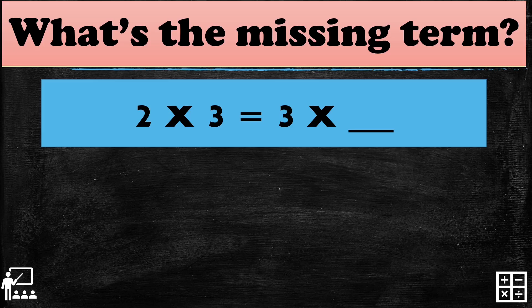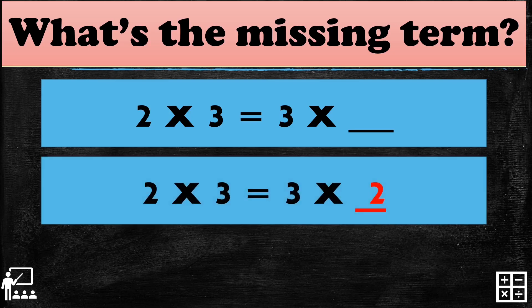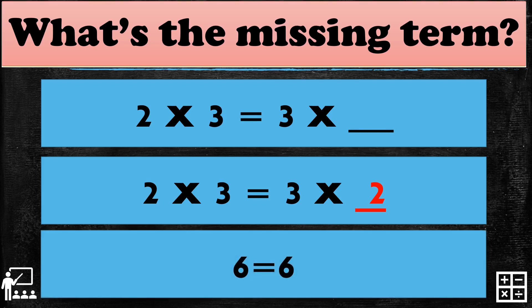Can you guess what is the missing term in that equation? That's right, it is number 2. If you multiply 2 by 3, it gives you 6. And on the other side, if you multiply 3 by 2, it also gives you 6. So our answer of 2 is correct.